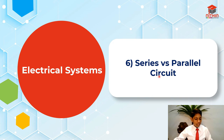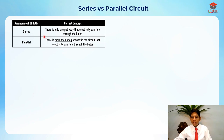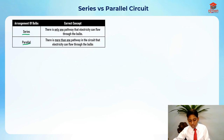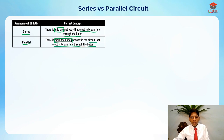For the sixth segment, I'll go through series versus parallel circuits. In a series circuit, there is only one pathway of electricity that can flow through the bulbs. In a parallel circuit, there is more than one pathway in the circuit that electricity can flow through the bulbs.